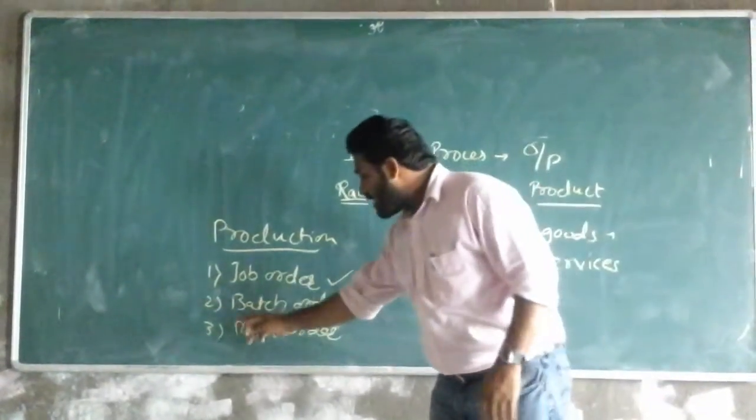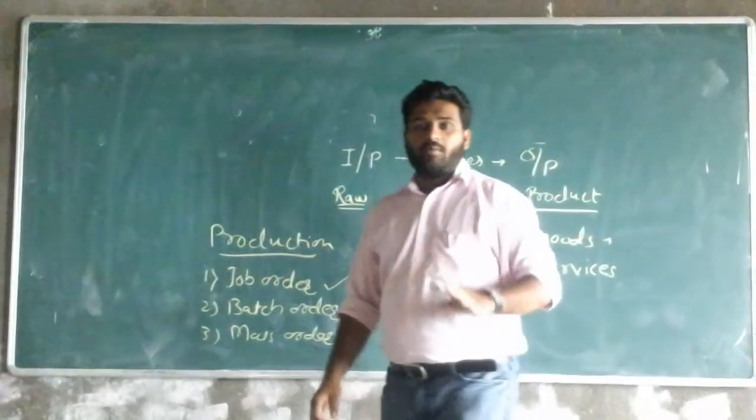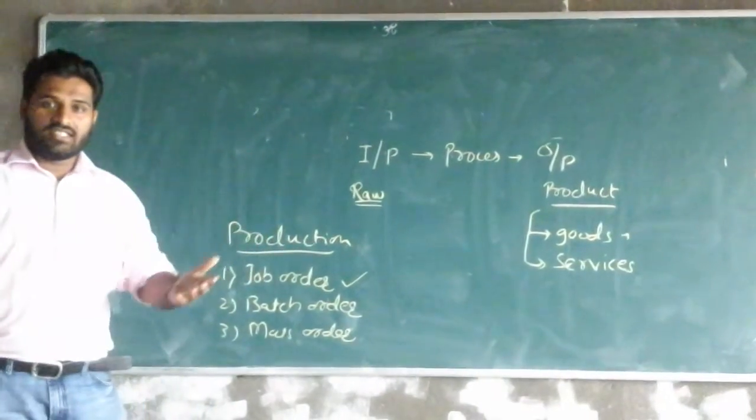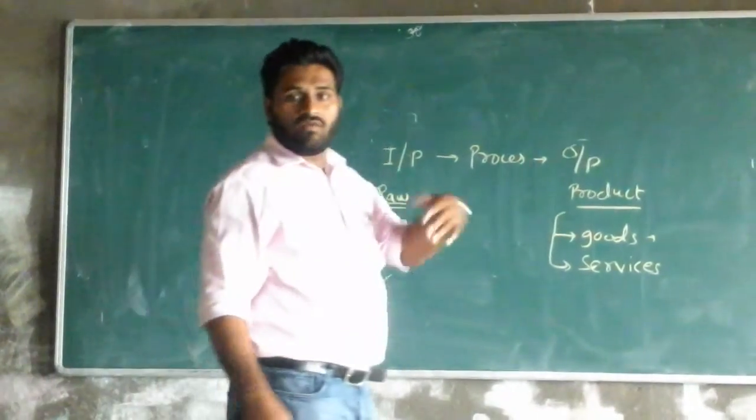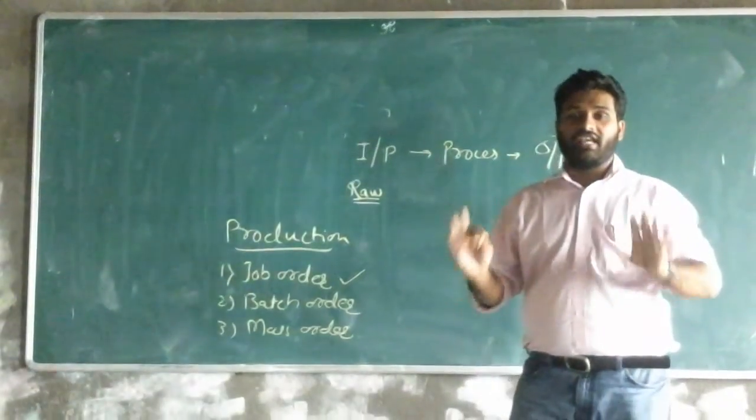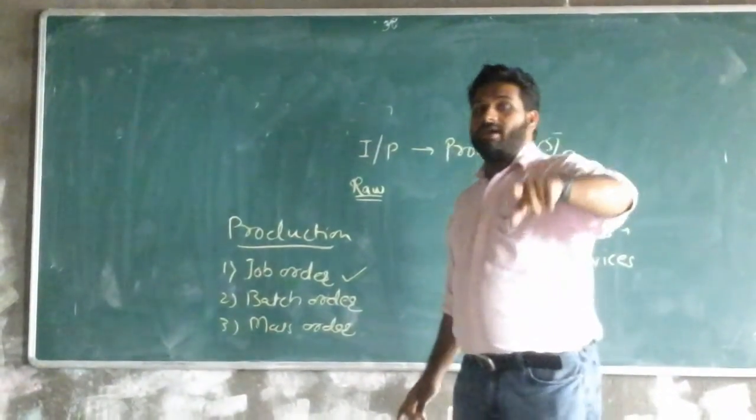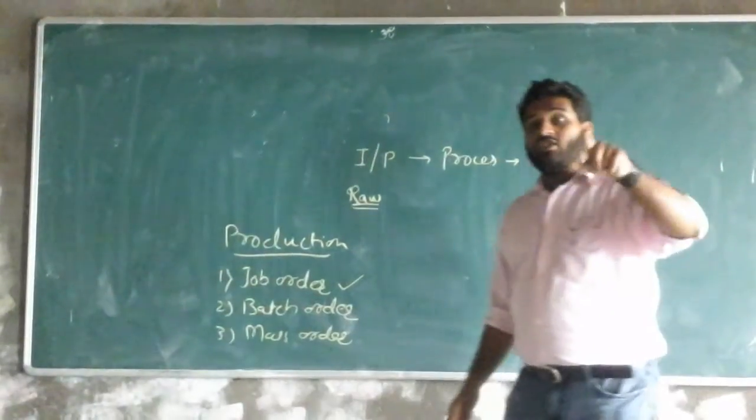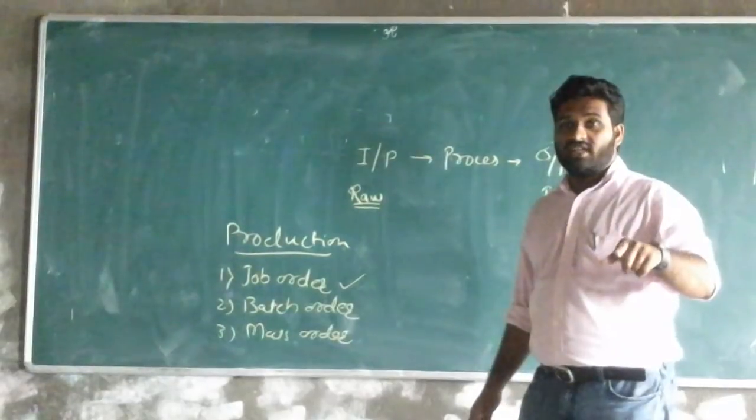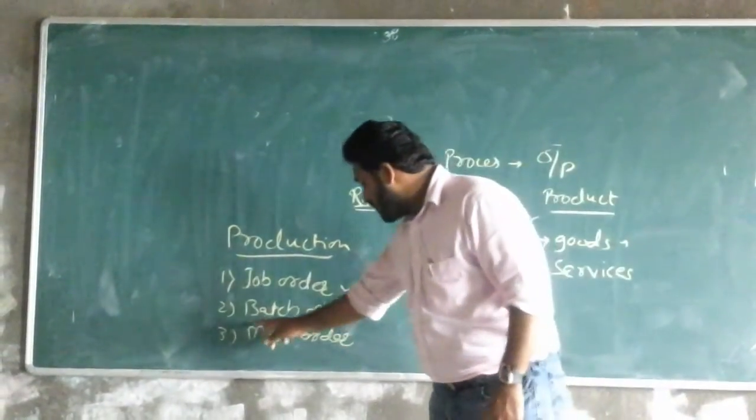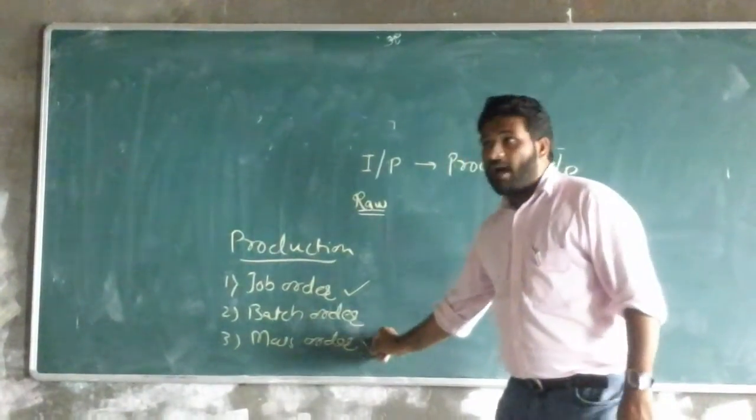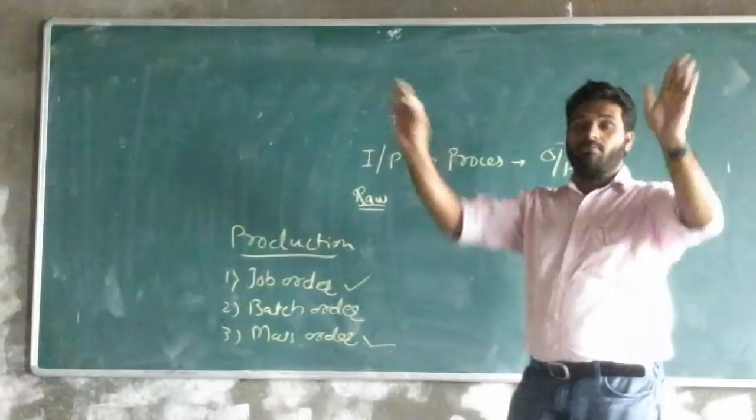Now last is the mass production industry. In mass production industry, what we generally think, the production of vehicles, the production of motorcycles, the production of cars are concerned under this mass production industry. In mass production industry, the parts produced are in very large numbers.